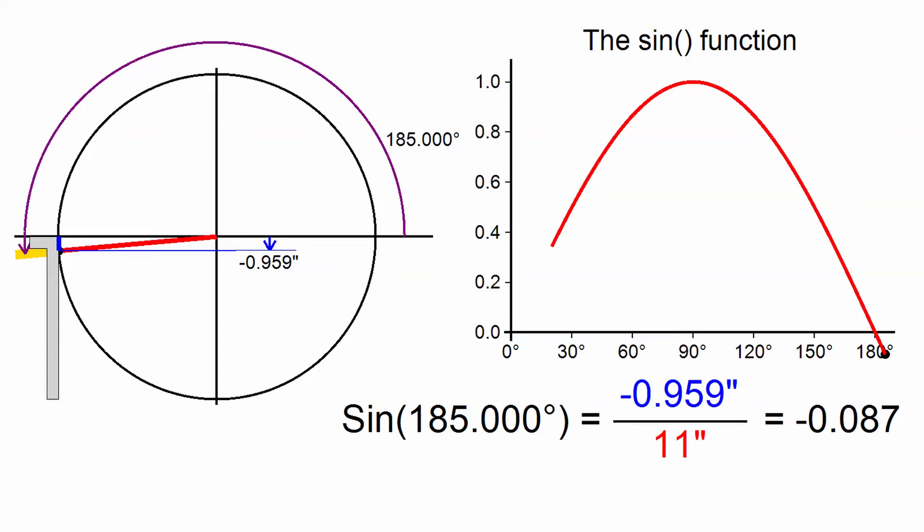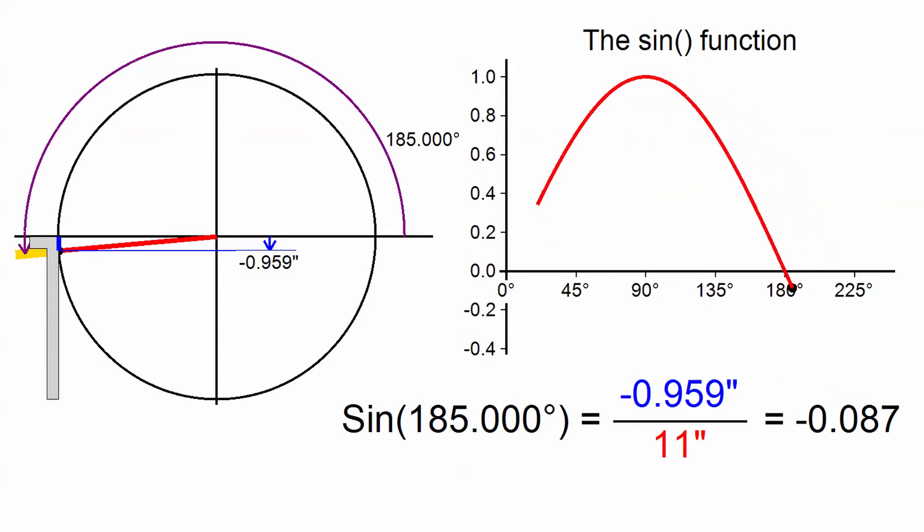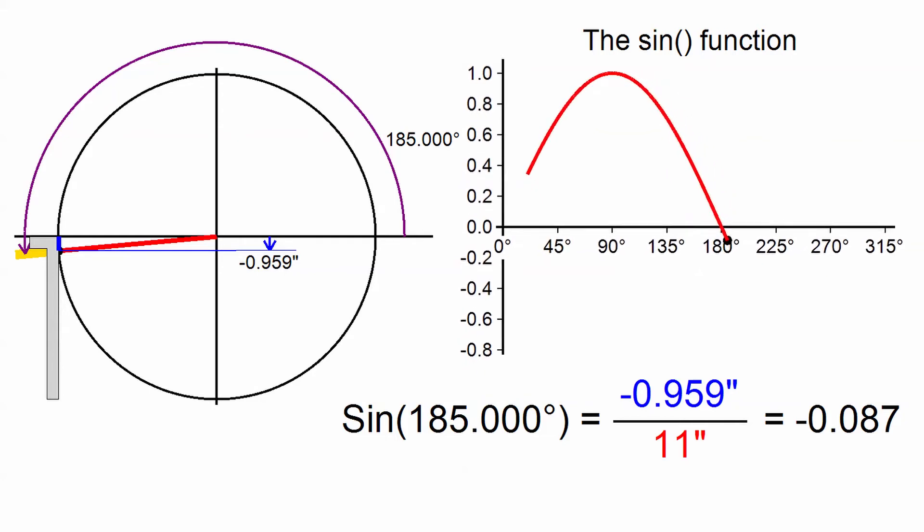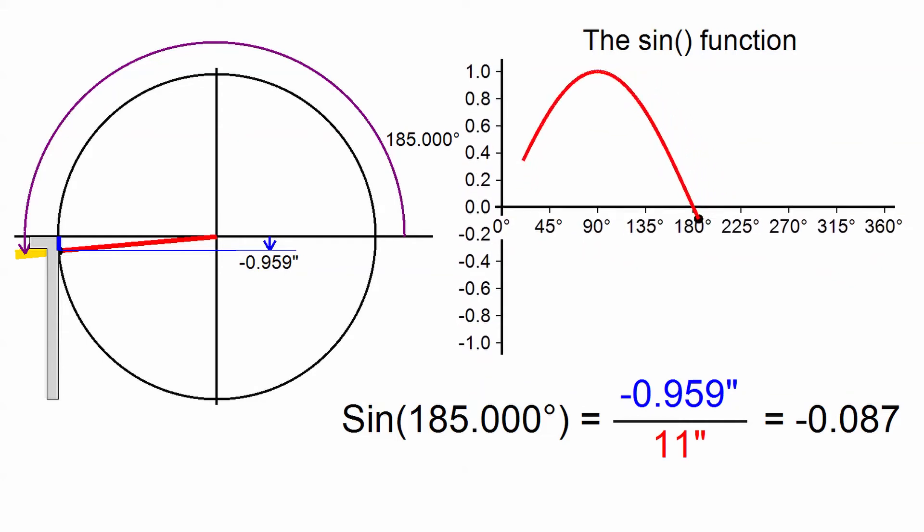It's clear that we're now going to need longer axes on the graph, both along the horizontal to measure degrees greater than 180, and also along the vertical to measure negative values of sine. Let me do a bit of stretching.